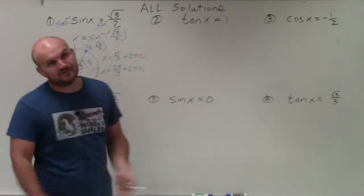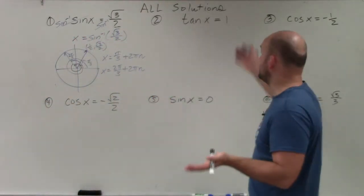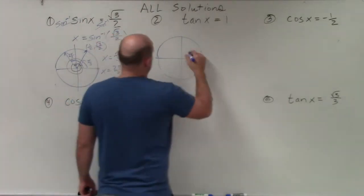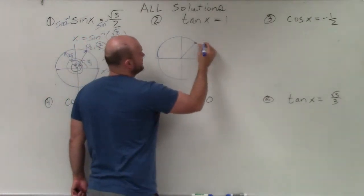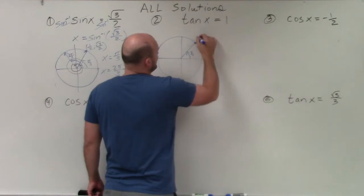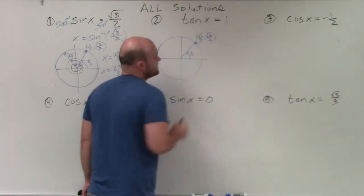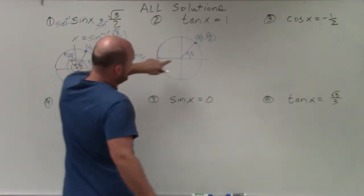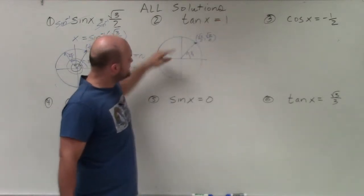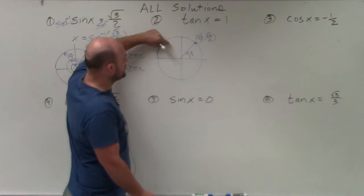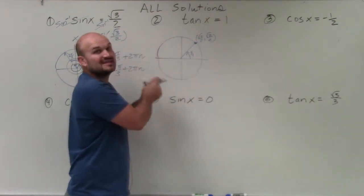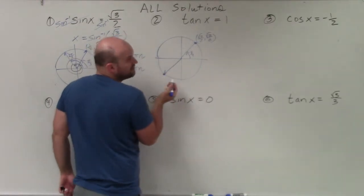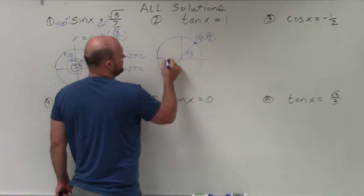Now let's solve tangent of x equals 1. I need to find the angles where tangent equals 1 using the unit circle. At angle pi over 4, the coordinate is square root of 2 over 2 comma square root of 2 over 2. Since tangent is y over x and those coordinates are equal, dividing gives 1. Tangent is also positive in the third quadrant where both sine and cosine are negative, giving us the point negative square root of 2 over 2 comma negative square root of 2 over 2, which is 5 pi over 4.